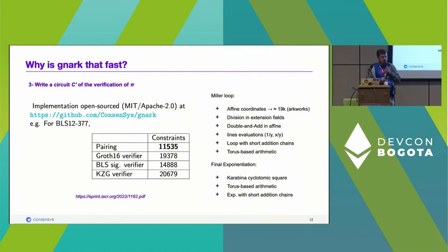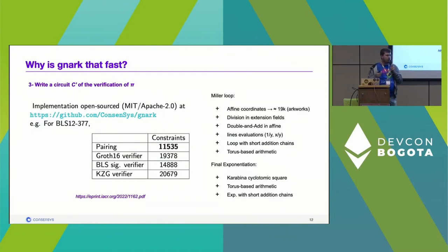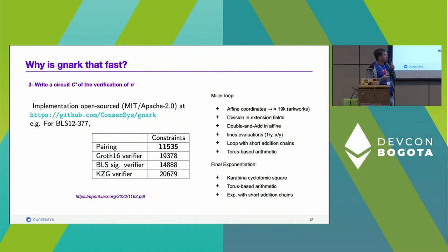The second optimization is writing circuit C′ for verification of π — pairing checks inside a circuit are expensive. There is a long line of research on pairing computation outside circuits; BLS377 pairings outside a circuit take under 1 millisecond. But translating those optimizations naively into a circuit gives roughly 80,000 constraints in R1CS. We were able to reduce this to 11,500 constraints. Prior implementations: arkworks and libsnark had this, and a new one in zk-pairing by 0xPARC. The state of the art in arkworks was 19,000 constraints; we reduced it to 11,500.